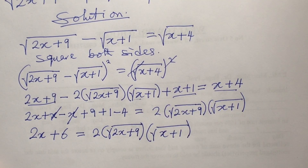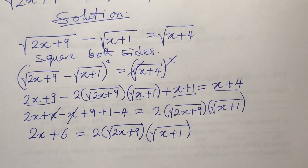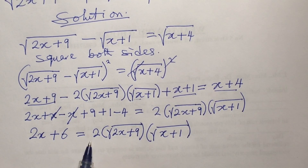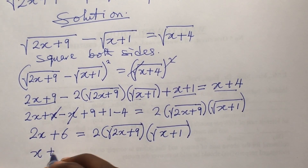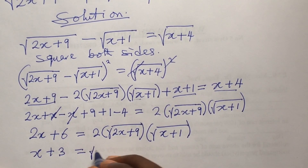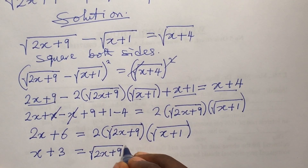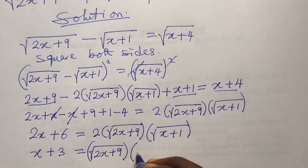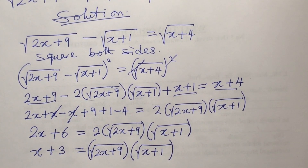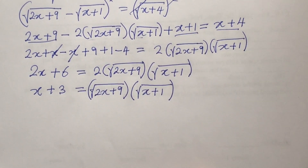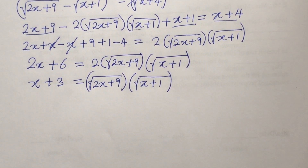Now you'll discover that 2 can be factored out from both sides. If we factor out 2 we are now left with x plus 3 equal to √(2x+9) times √(x+1).